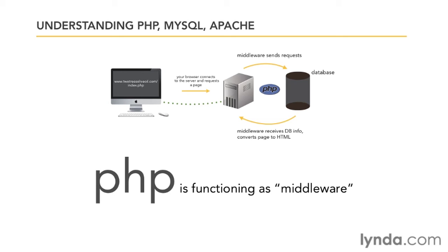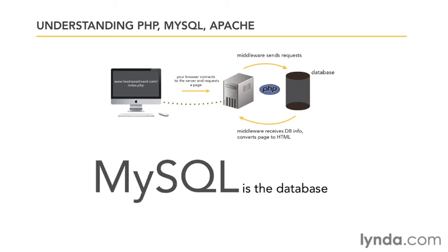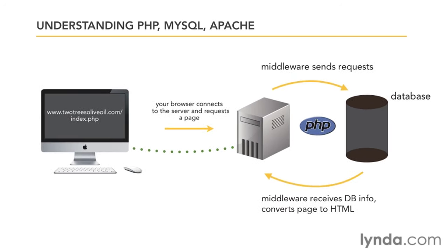The server and the database can't talk to each other directly — they need a translator. Other examples of programming languages used in this role include ASP, .NET, ColdFusion, Java, and Perl. A database is a collection of organized information. Joomla uses MySQL, though other types include MSSQL or Oracle. The database receives a request for information from PHP via a database query. The requested information is copied from the database and sent back to PHP. PHP arranges the database information as specified in the PHP code, and the actual PHP code is stripped out and replaced with HTML.